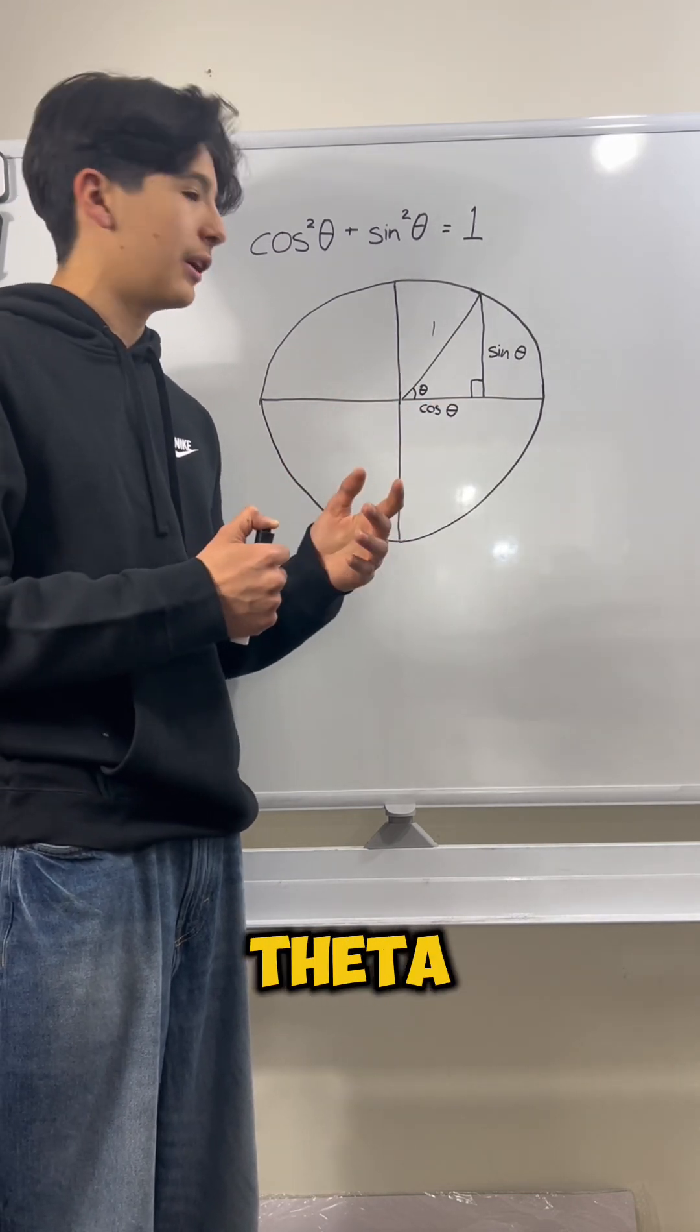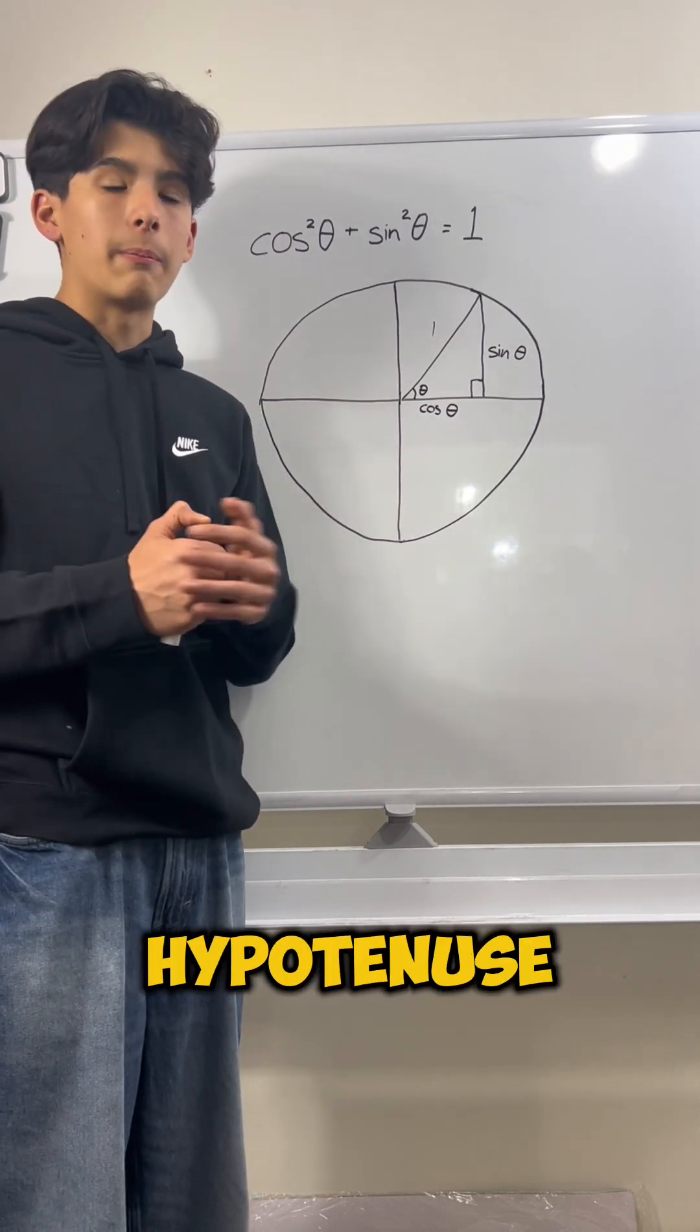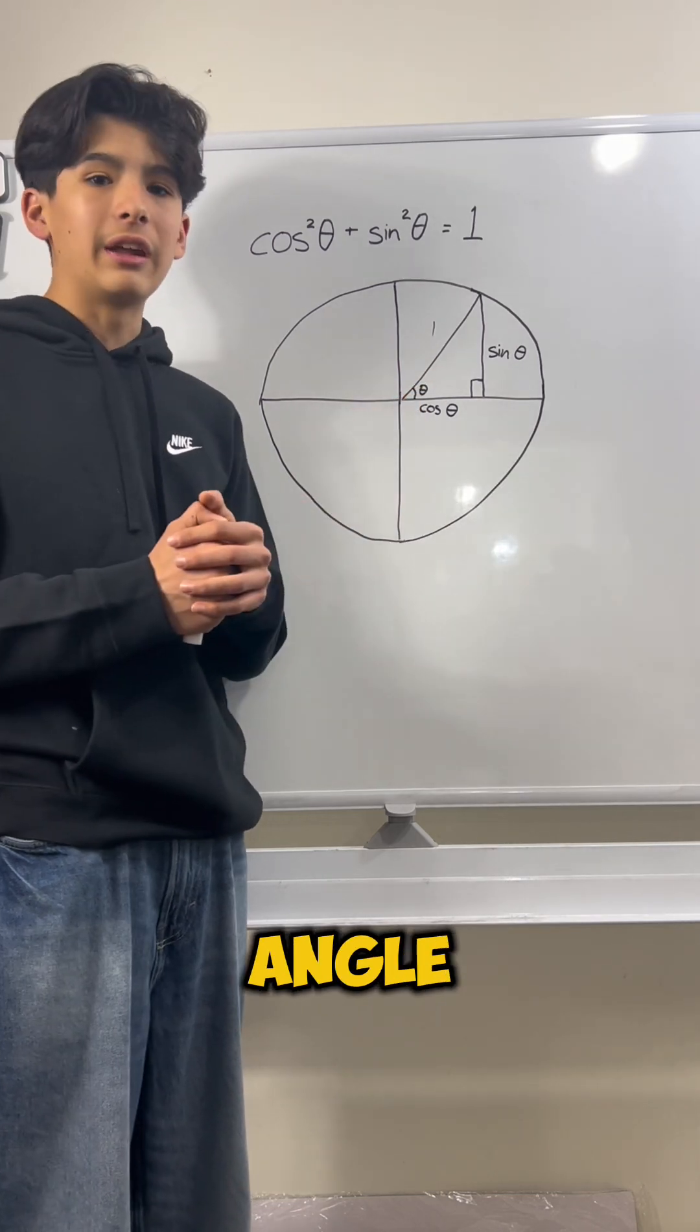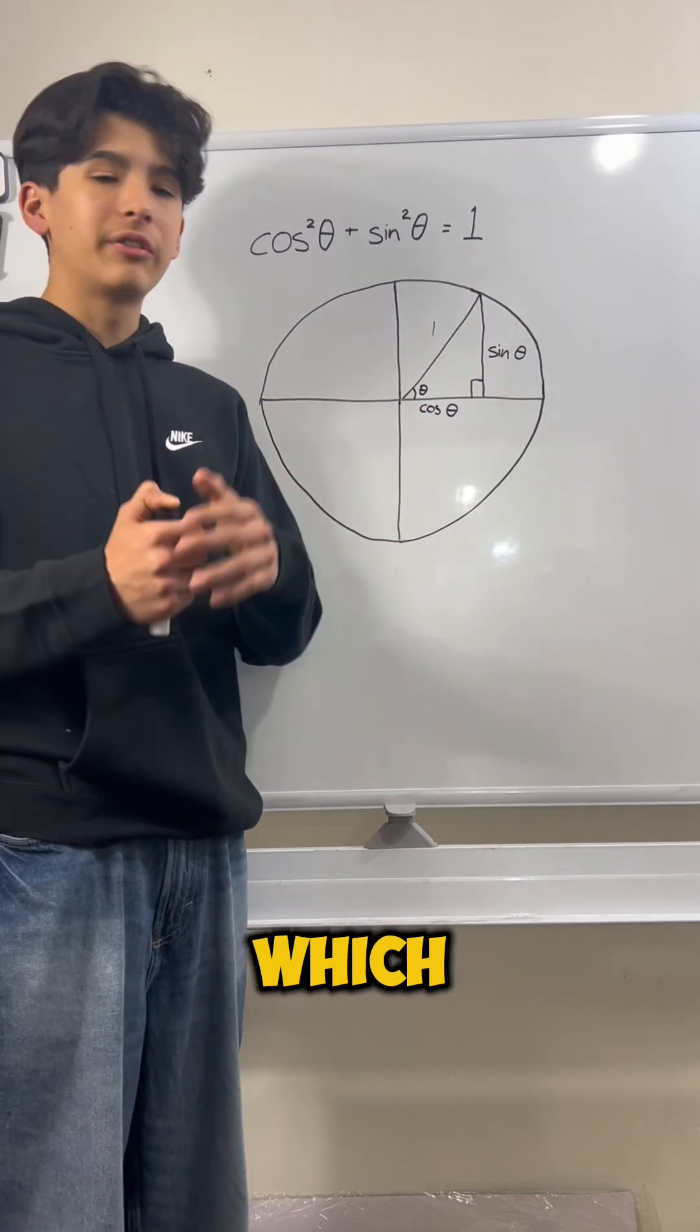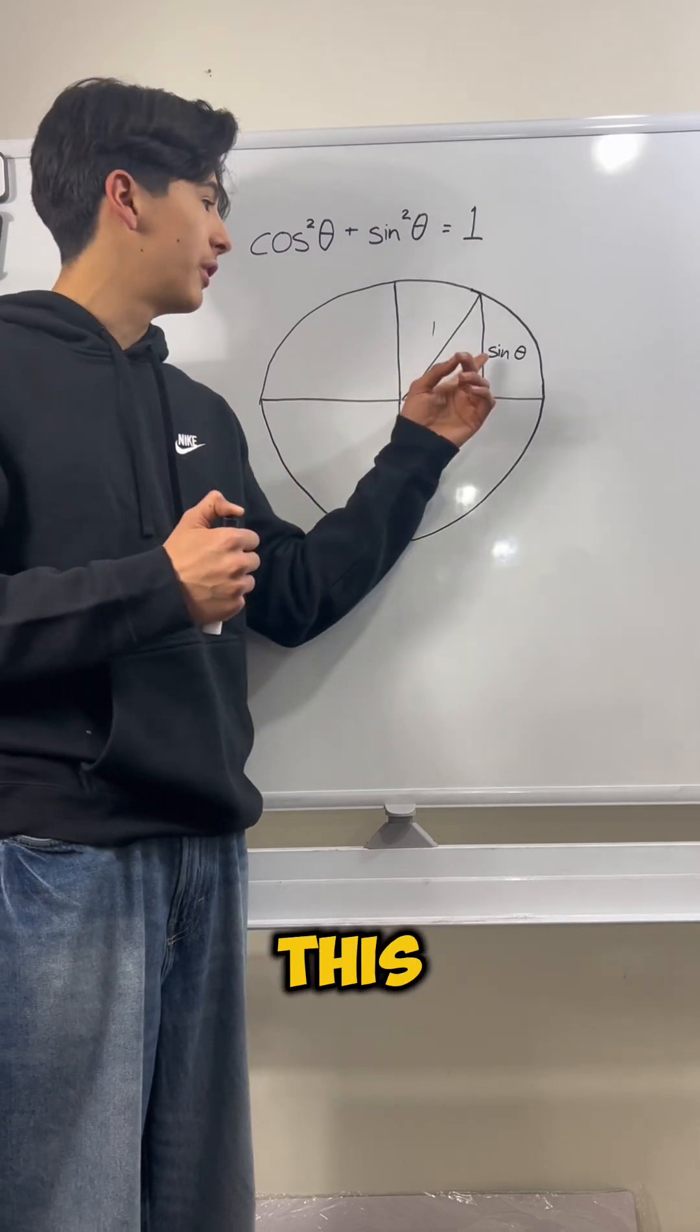Same for this one, sine of theta. Sine is opposite over hypotenuse. So if we take the sine of this angle, it would just be this length over this length, which means it would just be the sine of theta for this length.